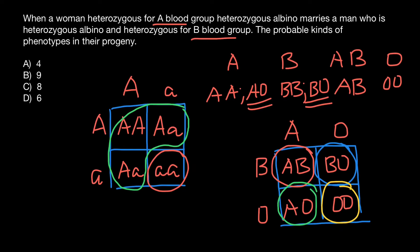So our calculations would be simple. For the first trait, we would have two phenotypes. And for the second trait blood group, we have four variants. And this would give us a total number of different phenotypes in the progeny of this couple as eight. And this is answer C.